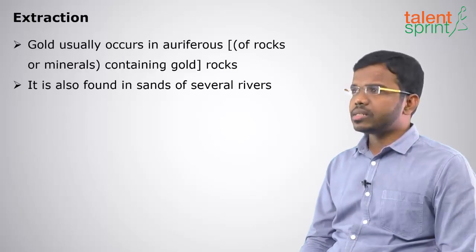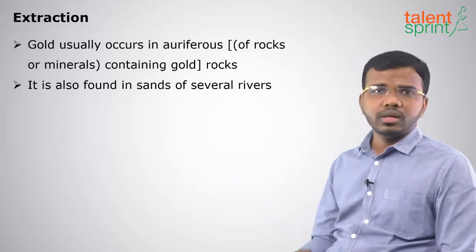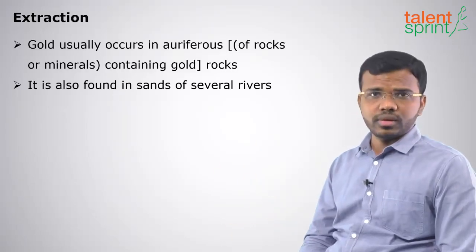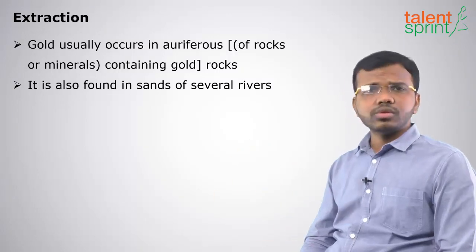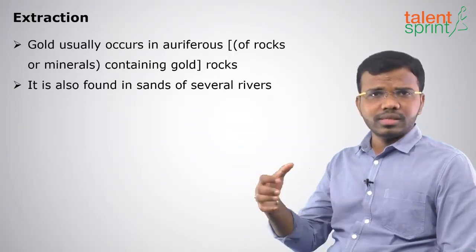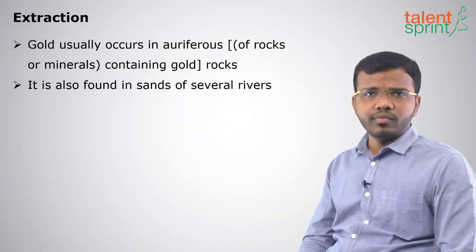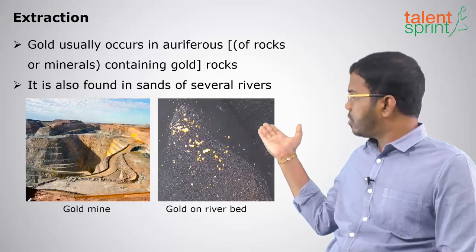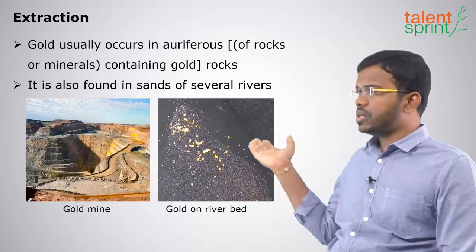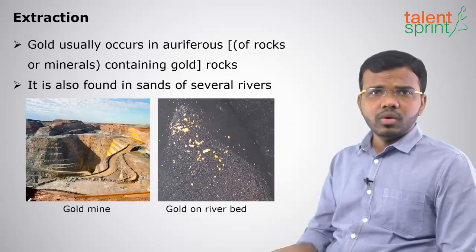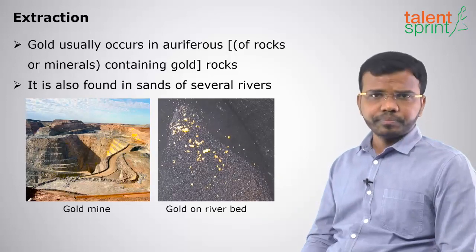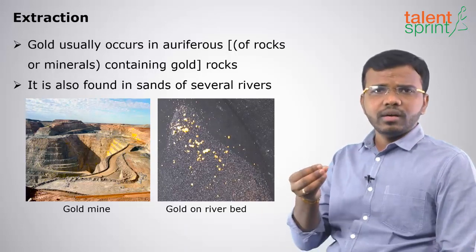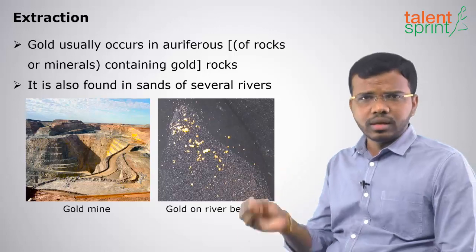How is gold extracted? Gold is generally extracted through gold ores, which are called auriferous ores. It is also found in the sands of riverbeds. On the left side you can see a gold mine, and on the right side you can see gold spread on a riverbed. You can find very little gold in the riverbed.